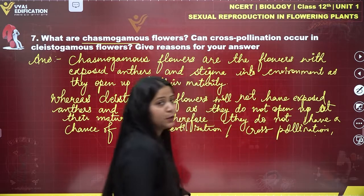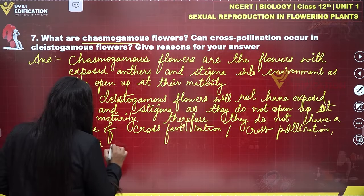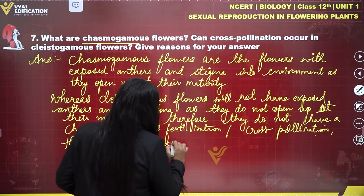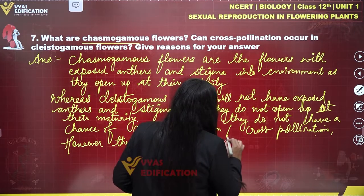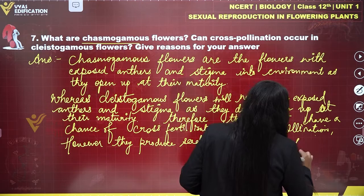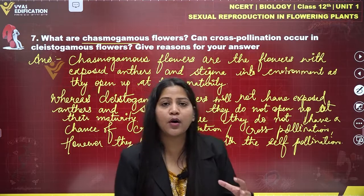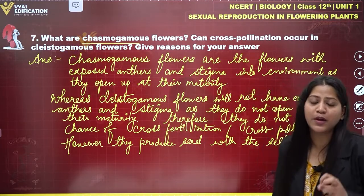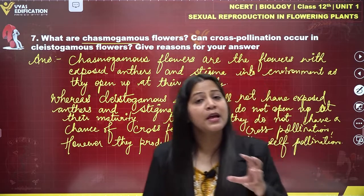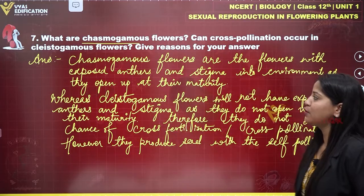However, they produce seed with the help of self-pollination. They will undergo self-pollination to produce seeds because they do not have exposed anthers and stigma into the environment, so there is no chance of cross-fertilization or pollination in them. They produce seed with the help of self-pollination. And this is the complete solution of question number seven.